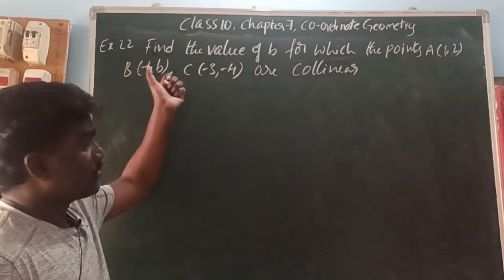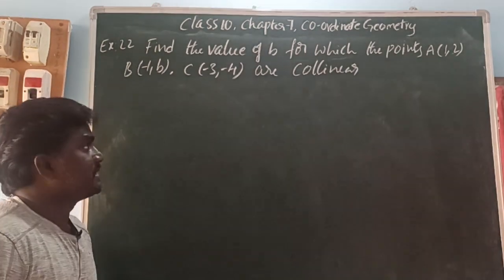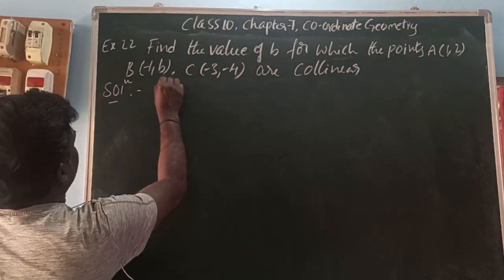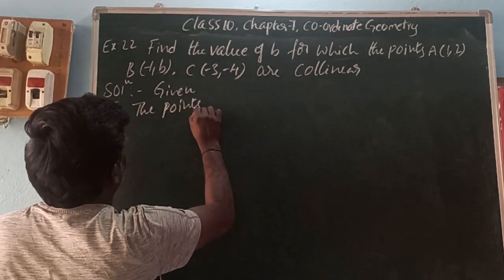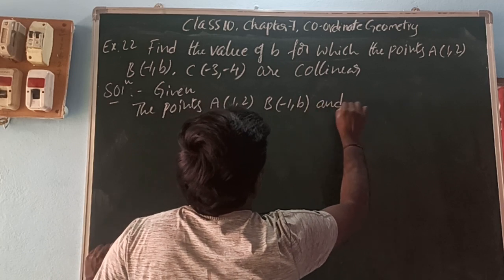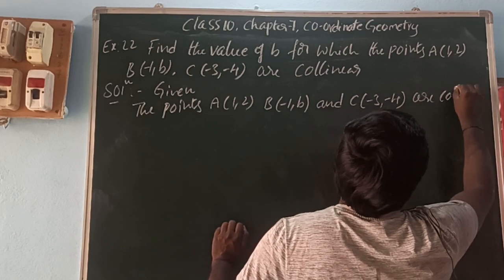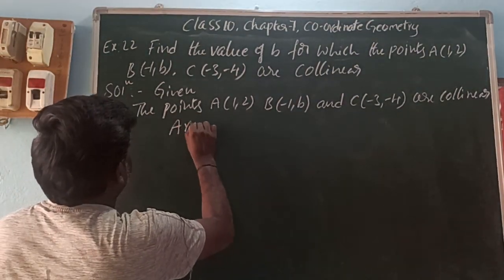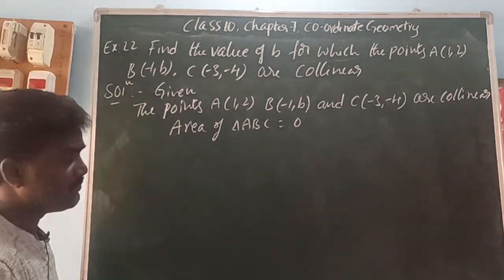Example 22: Find the value of B for which the points A(1, 2), B(-1, B), C(-3, -4) are collinear. Since the points are collinear, area of triangle ABC = 0. Using the formula: (1/2)|x1(y2 − y3) + x2(y3 − y1) + x3(y1 − y2)| = 0. Here x1 = 1, y1 = 2, x2 = -1, y2 = B, x3 = -3, y3 = -4.